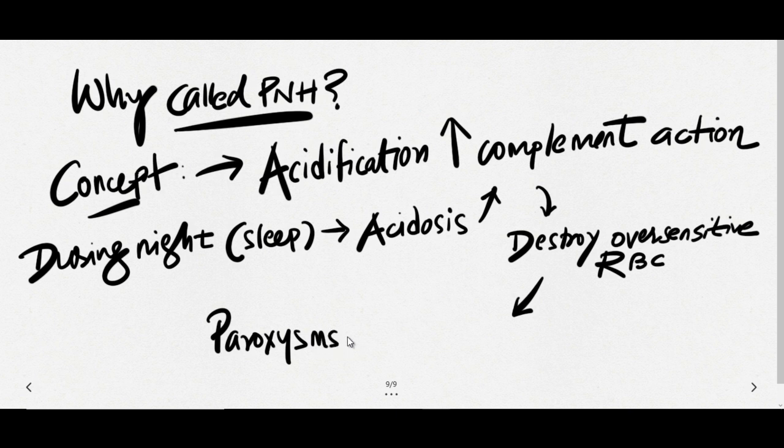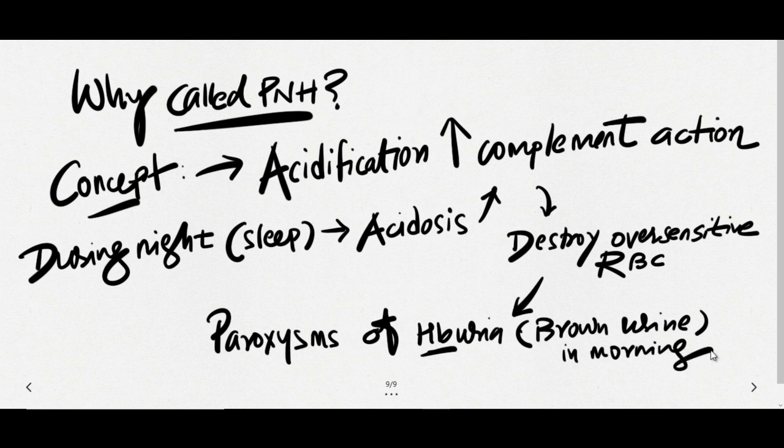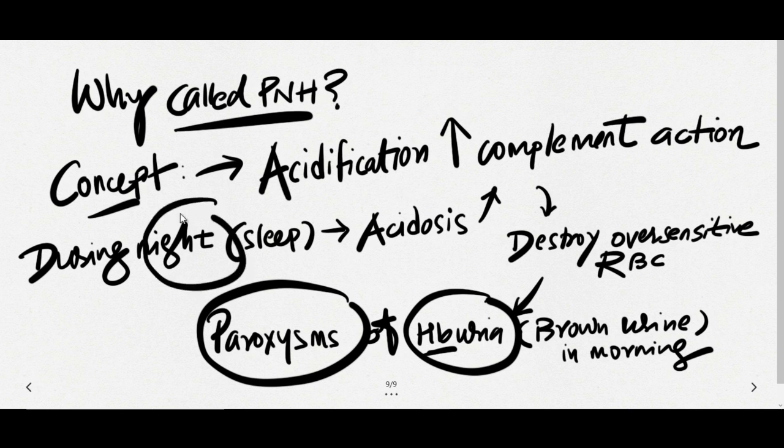When hemoglobin appears in urine, it usually gives urine a color that is brown in nature. So when a person wakes up in the morning, that person will have brown colored urine. So why it is called PNH? Because during night time the acidosis develops and that will increase the complement mediated destruction of RBC and that leads to hemoglobinuria.